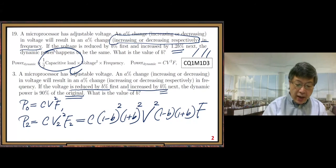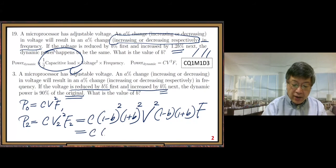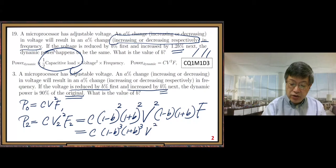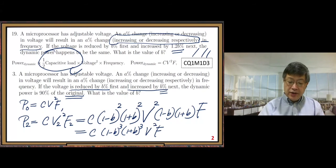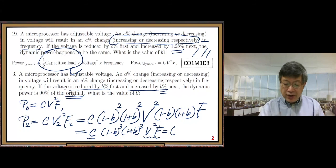After that, we can combine these numbers. 1 minus b cube times 1 plus b cube, v square f. You can see, basically c times v square f, that's p0. We can write 1 minus b cube, 1 minus b, 1 plus b, we can combine. Because the difference of squares, we can use that formula. 1 minus b square cube p0.